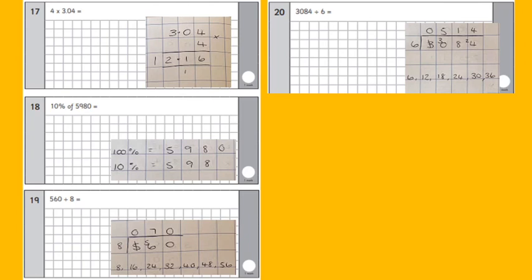Number 18, find 10% of 5,980. Well, that's nice and straightforward. To find 10% of any number, you just divide it by 10, which gives me the answer 598.